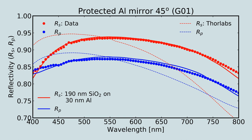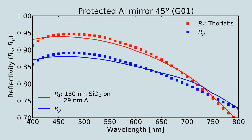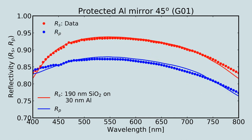We found that the manufacturer data are well represented by a similar 30 nm aluminum coating, but overlaid with a thinner layer of silicon dioxide, 150 nm rather than the 190 nm we measure.